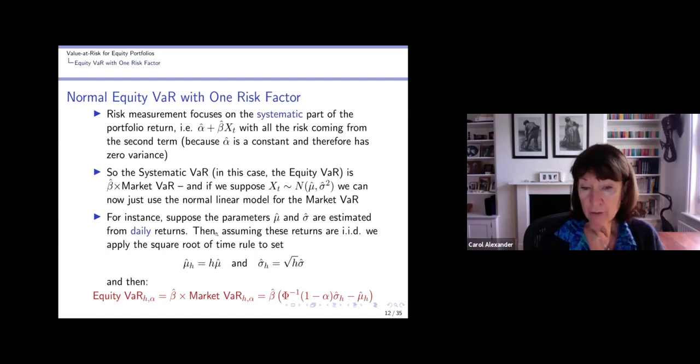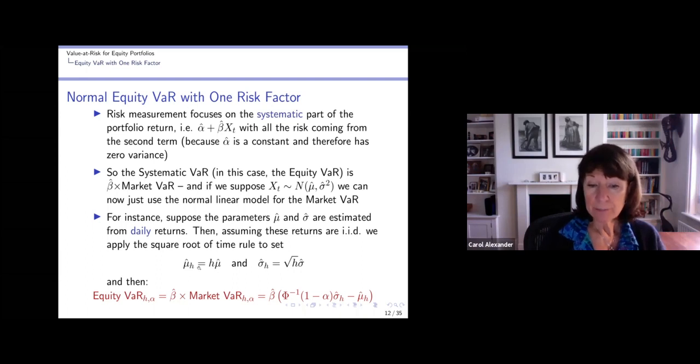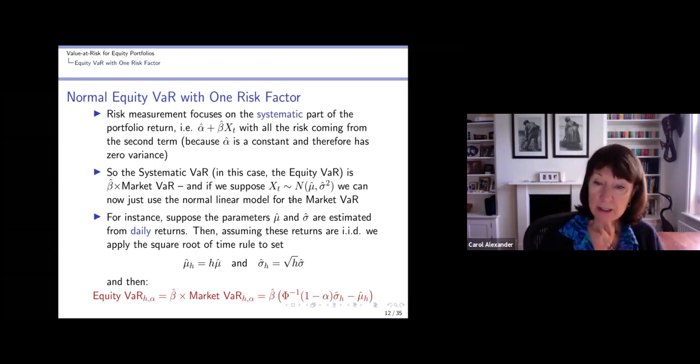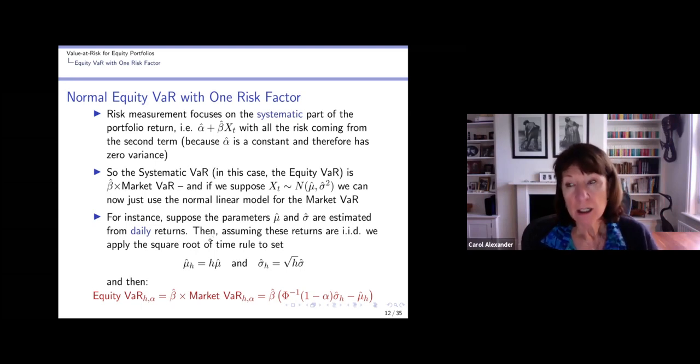For example, if this mu hat was estimated from daily returns, then we would use H to be our parameter, a holding period. It could be 10 days, very often it is. So H would be 10. If we've got weekly returns and we want a holding period of 10, then H would be 2 because weekly returns are every five days. So we would calculate the mu hat for the holding period and the sigma hat for the holding period. Don't forget the sigma hat uses the square root of H. And then the market VaR calculated using the standard formula for the normal linear VaR model. And we just pre-multiply that by our beta estimate, 1.17 or whatever it is, to get the equity VaR.